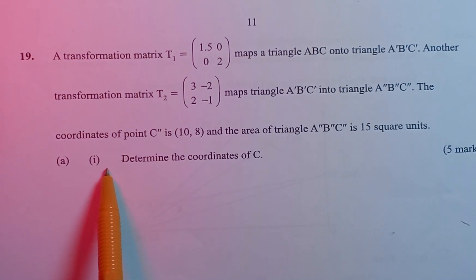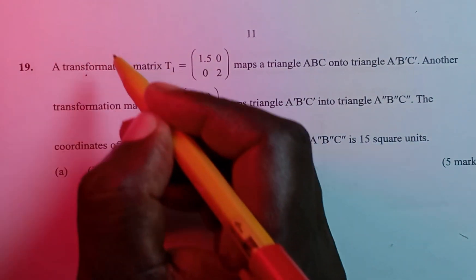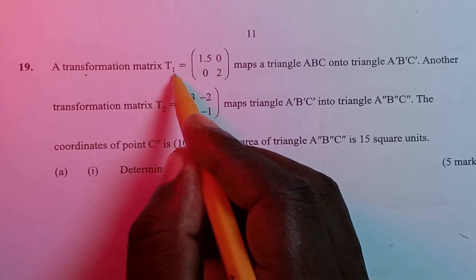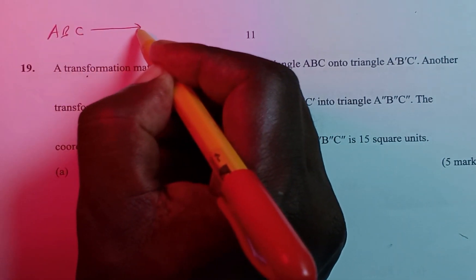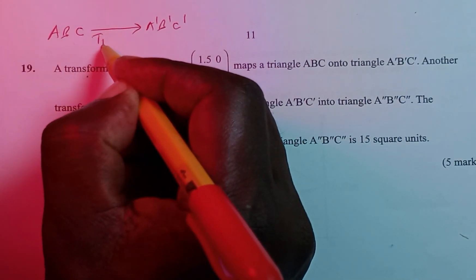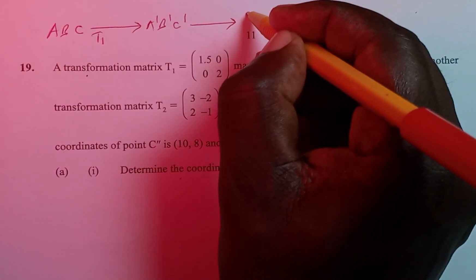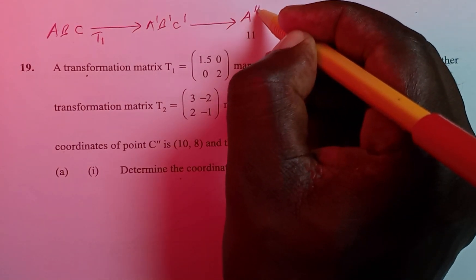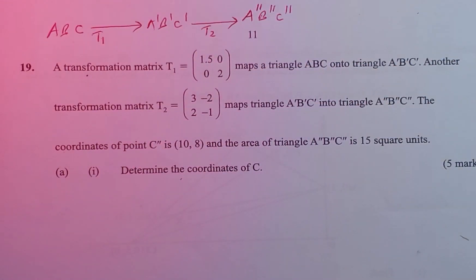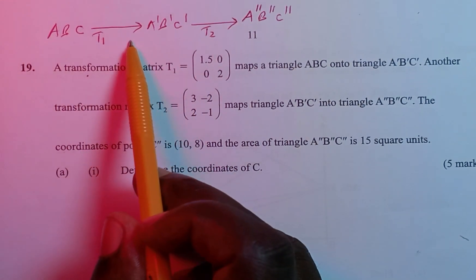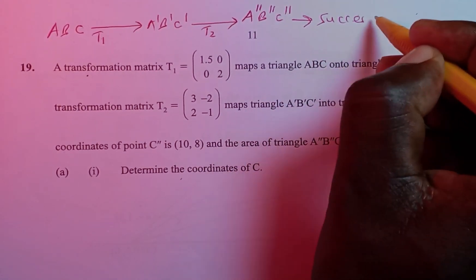The first part of the question asks us to determine the coordinates of C. The first thing we need to understand is that we have two transformations here — T1 and T2. Triangle ABC is mapped onto A'B'C' with transformation T1, and then A'B'C' is mapped onto A''B''C'' with transformation T2. This is what we call successive transformation.